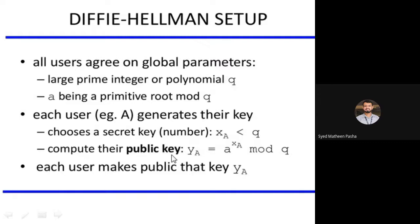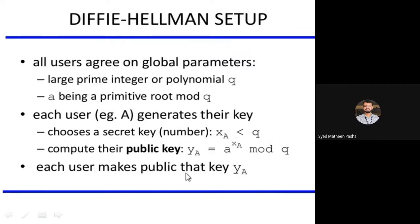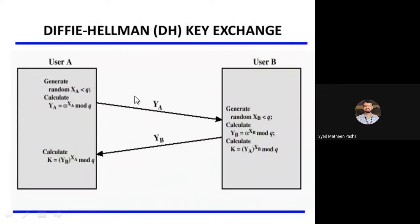Compute the public key YA using the formula: YA = A to the power of XA mod Q, where A is the primitive root and Q is the prime integer. Each user makes their public key YA public to all users. This is the concept we work with.